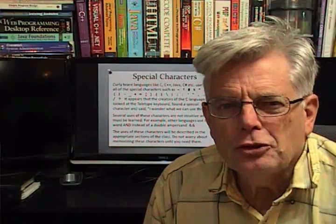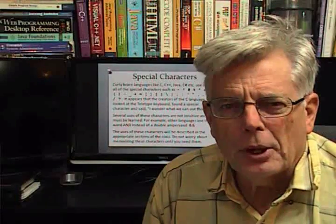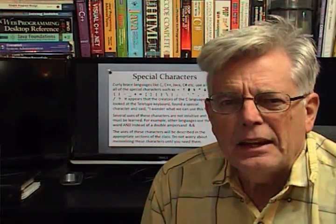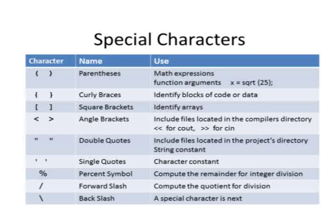The C and C++ languages use almost every character that's on the keyboard. When the developers of the original C language were working with a teletype printing terminal, they said, 'I wonder what we can use this character for.' So a lot of languages spell out A-N-D for a logical AND, but C and C++ use the double ampersand. Instead of typing OR like other languages, C and C++ use the vertical bar. Here are three slides of special characters and their uses.